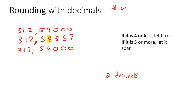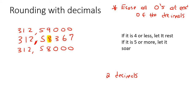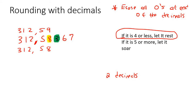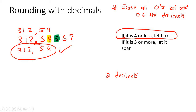Something that is very important: you can erase all zeros at the end of the decimals. So those trailing zeros you can get rid of. These are the two possible answers. Now, to work out what's going to happen, you look at the number to the right-hand side and use the rule. The number 3 is in the category of 4 or less — let it rest. That means leave this number alone, so it stays as 8. So the final answer is 312,58 when rounding to two decimals.